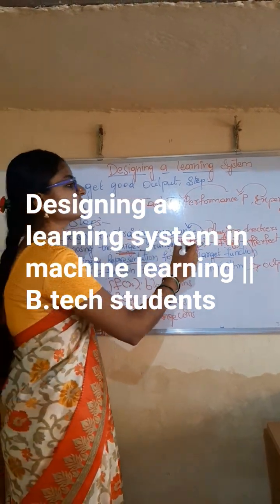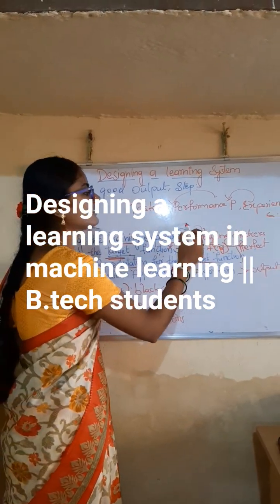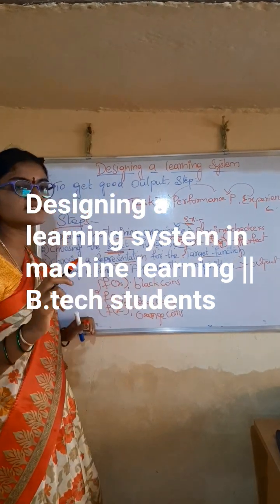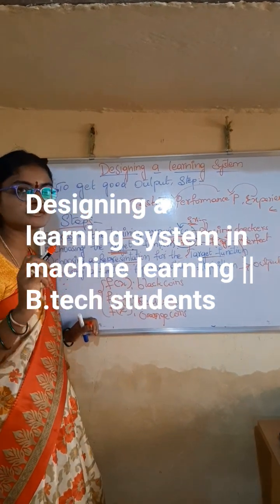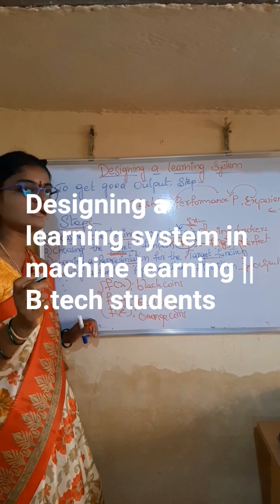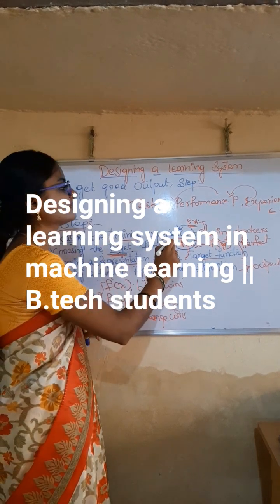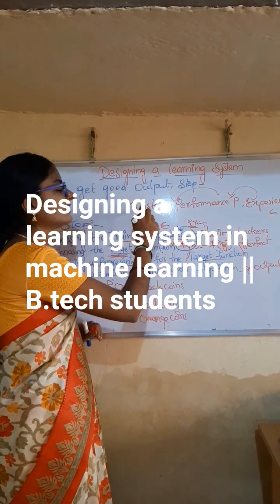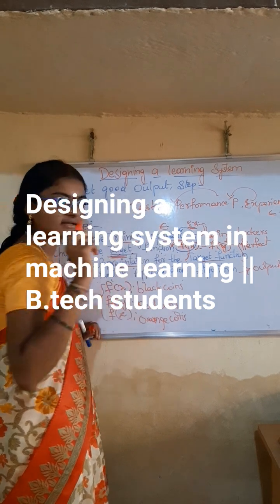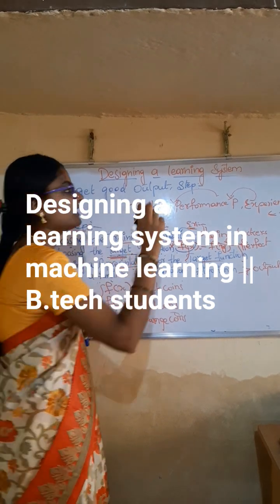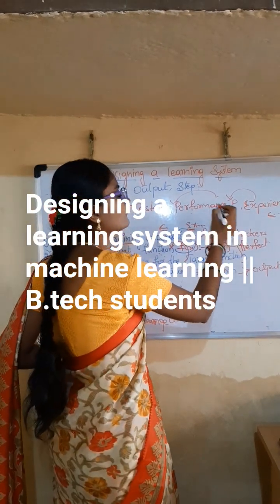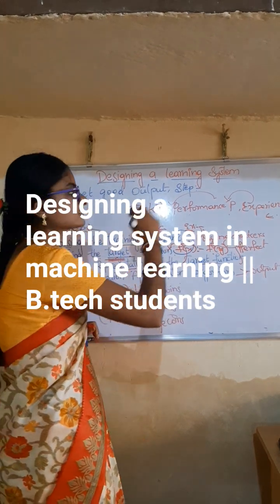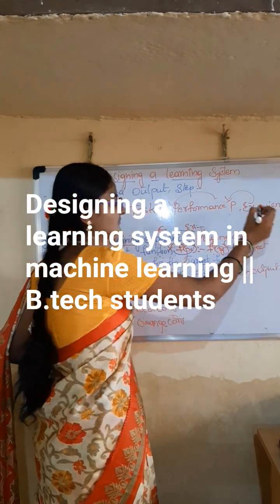Training experience — an example for this training experience was discussed in the well-known training algorithm post. There we have the training experience, denoted with E. Task T refers to a particular task, and performance P refers to what is the performance of that task. And next is experience E.